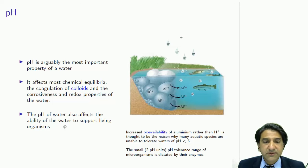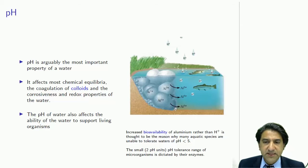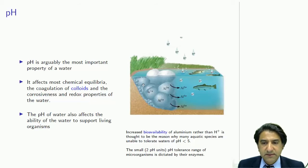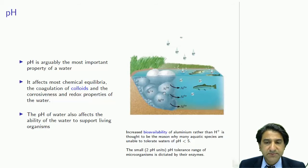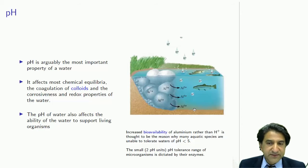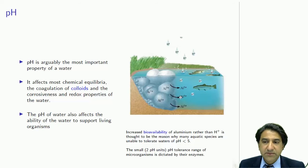The pH of water also affects the ability of water to support living organisms. Here's an example — a very unfortunate example. If the pH becomes very low, very acidic, then aluminosilicate materials, or perhaps metallic aluminium, will dissolve into the water if the pH is low. So that's an example of how pH is affecting a chemical reaction, and in that case the aluminium can get into living organisms and kill them.